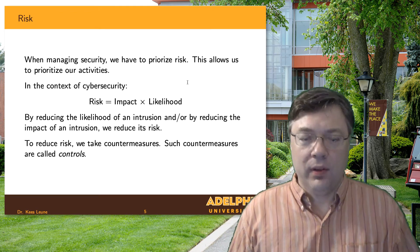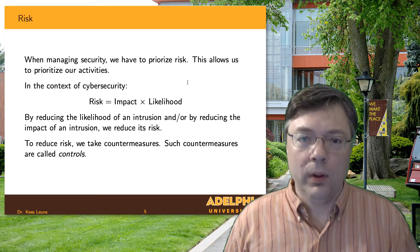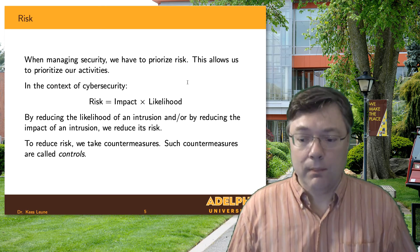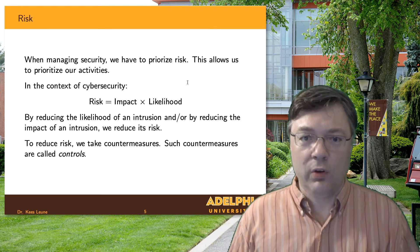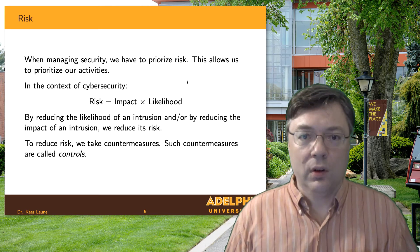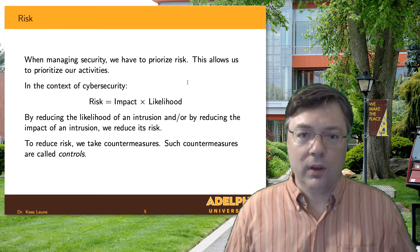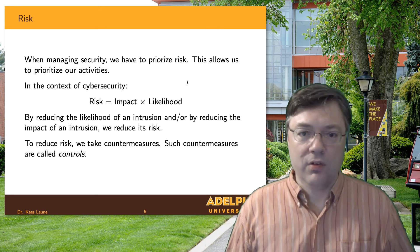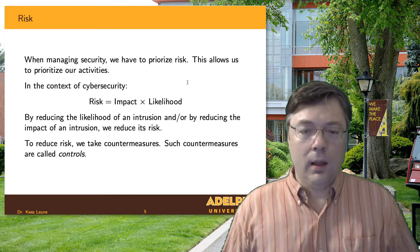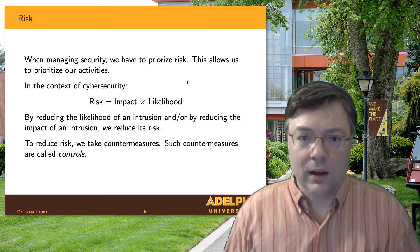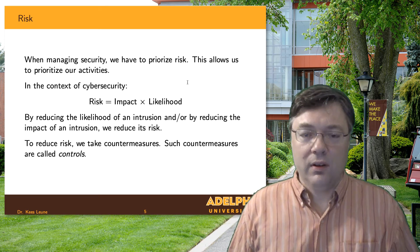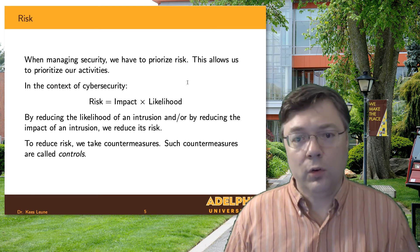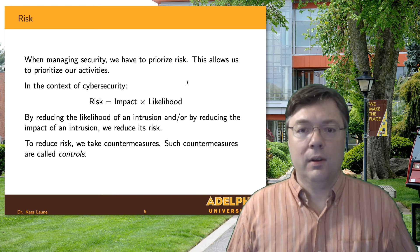Security is not a binary thing — a one or zero. Things can go wrong, but some things are more likely to go wrong, and some things, if they go wrong, are not that important, while others might be. When we're talking about risk — specifically risk to security — we're typically talking about two dimensions: likelihood and impact. The more likely that something goes wrong, the more the risk. The more damage would be done if it goes wrong, the more the impact. Risk is the combination of the two. We want to take steps to reduce the likelihood, or to reduce the impact, or maybe both, that an adverse event is going to happen. The steps that we take are called controls, and we have to think about what controls the database management system can provide to us.